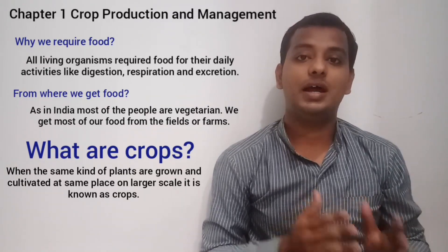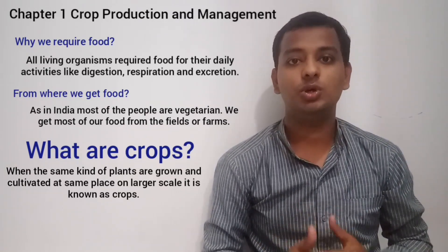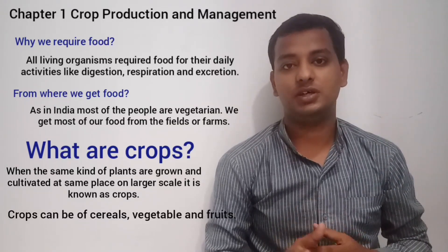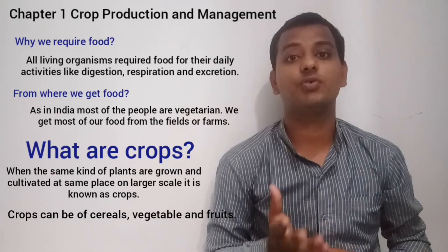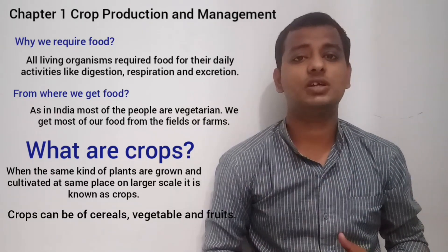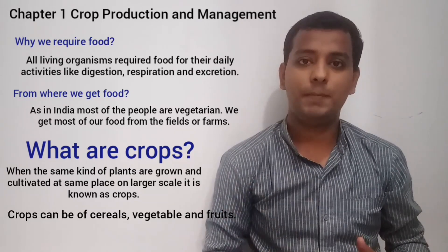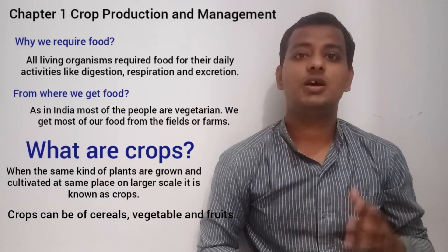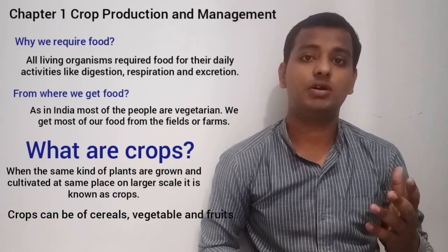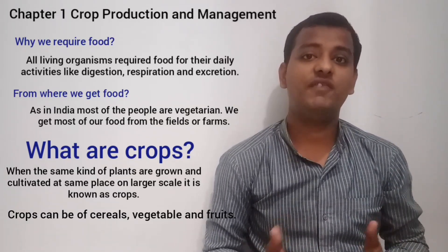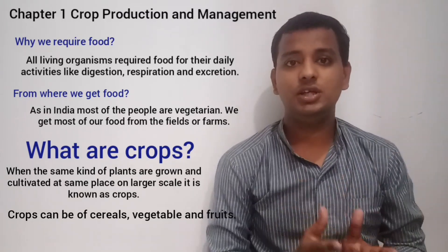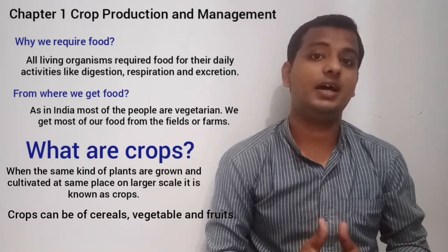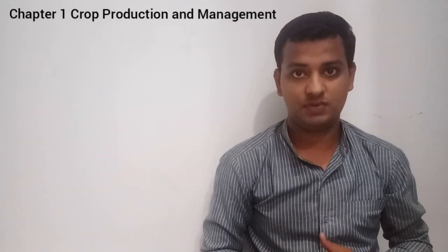These crops are provided to the larger community of people. Crops can be of many types — cereals like paddy, maize, wheat; pulses; vegetables like potato and tomato; and fruits like carrot, etc.